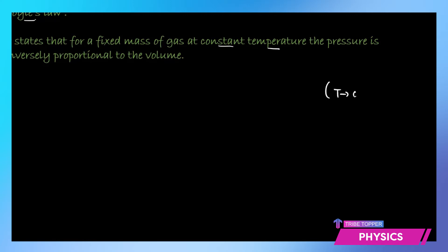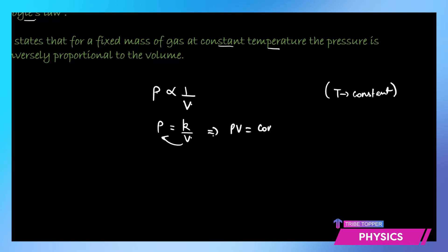When temperature is constant, remember that the pressure and volume are changing. The pressure is inversely proportional to the volume, so we say P is equal to some constant k over V. That gives you the product PV is a constant, and we often use this in numerical problems.